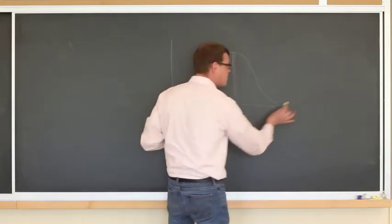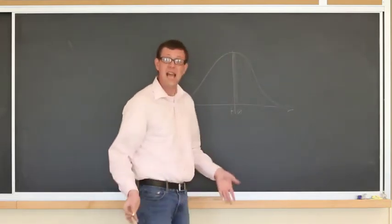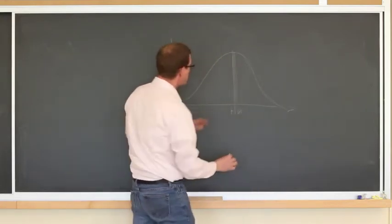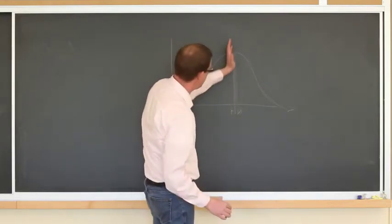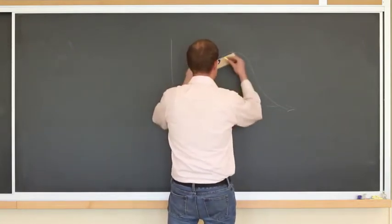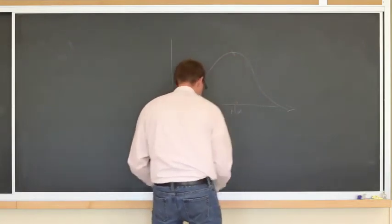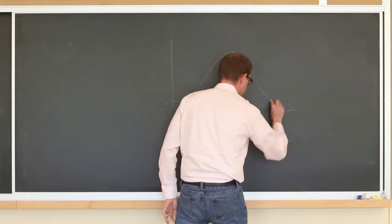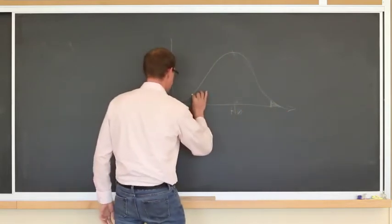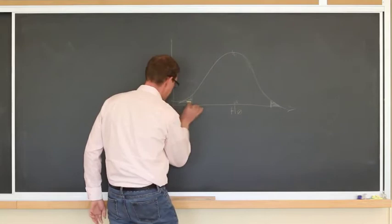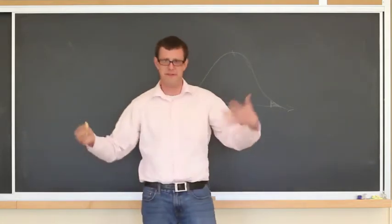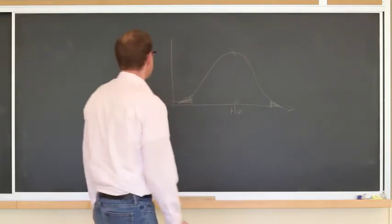What's extreme? These parts of the distribution — the tails — are extreme. We've got the body and the tails. If we were to take this 5% and put it just in the tails, we might have something like this. The shaded areas are representing 5% — these should be the same size on both sides.